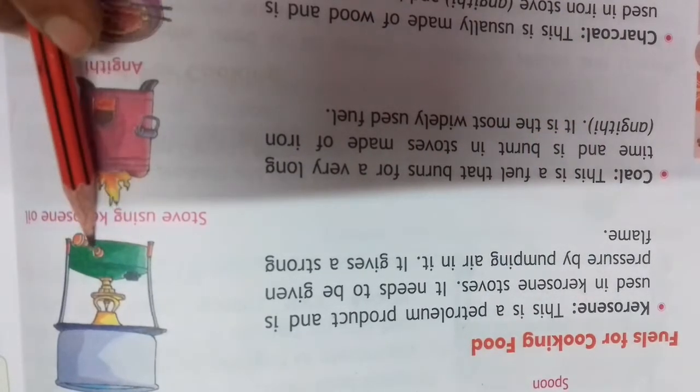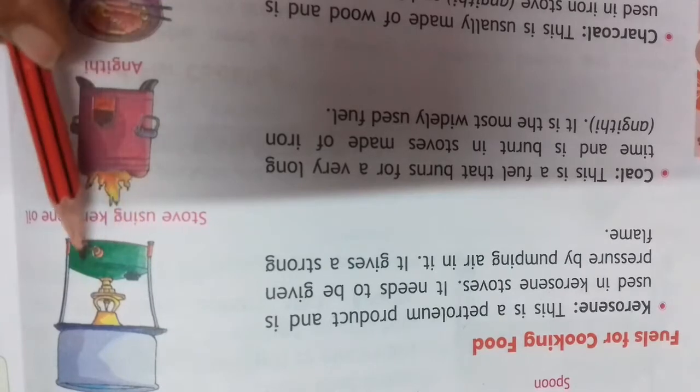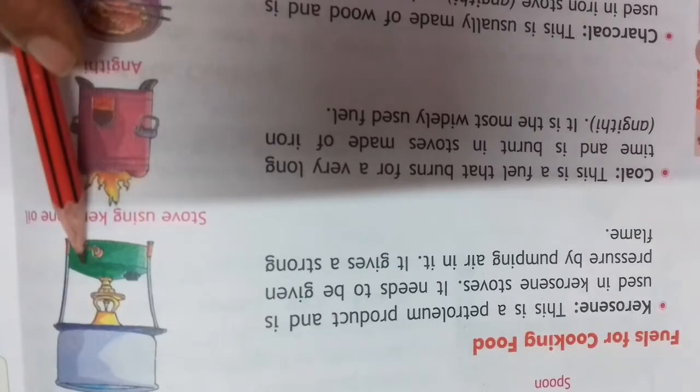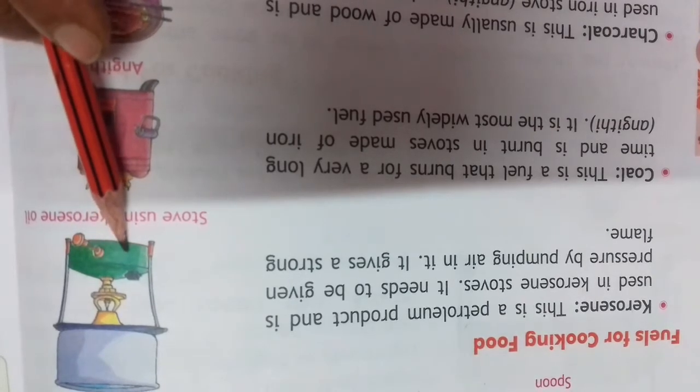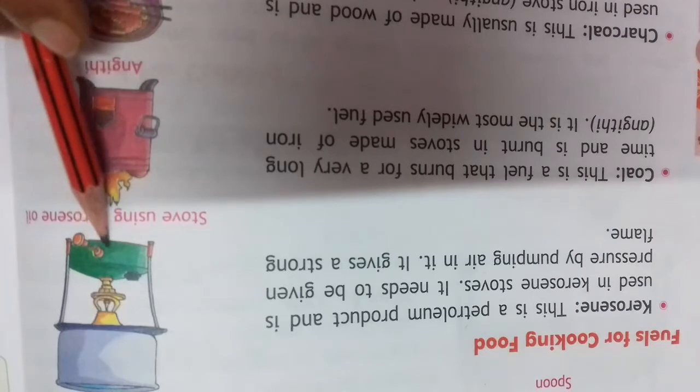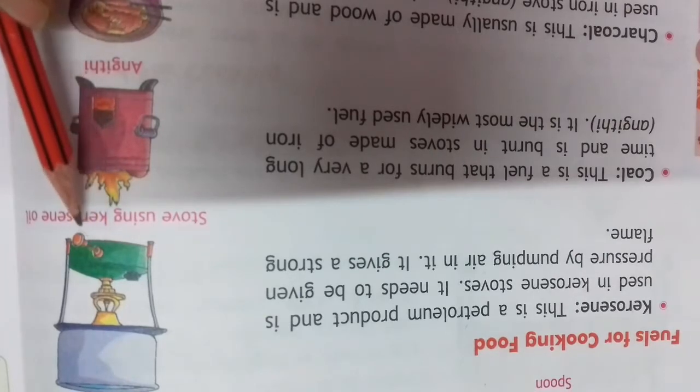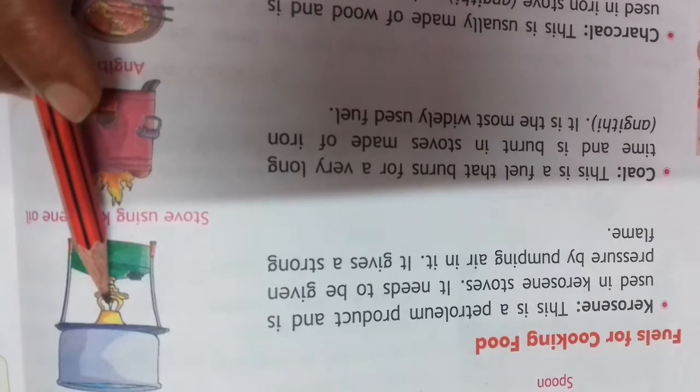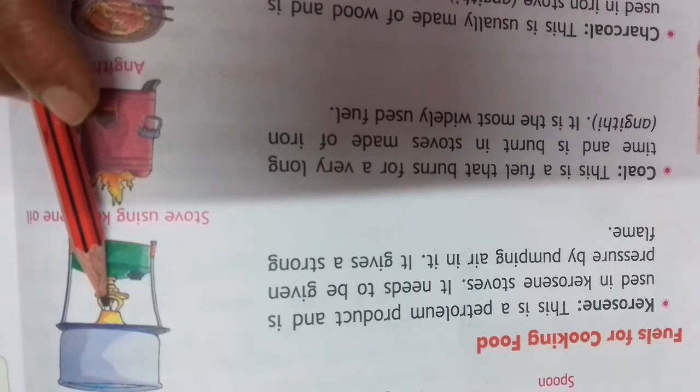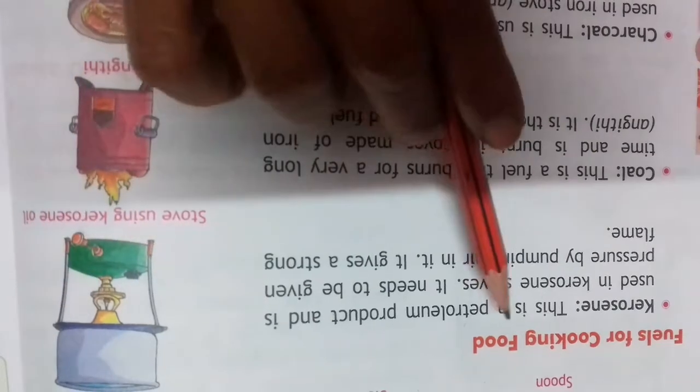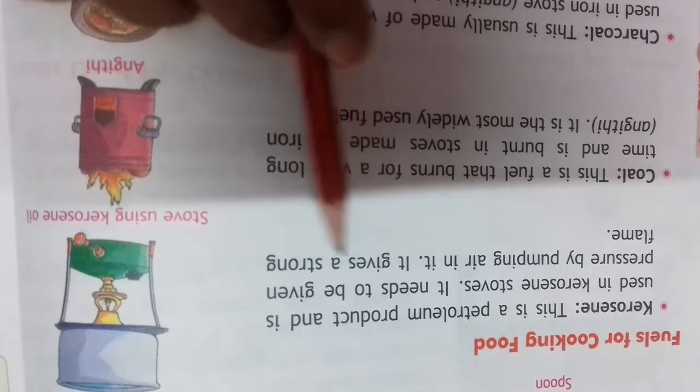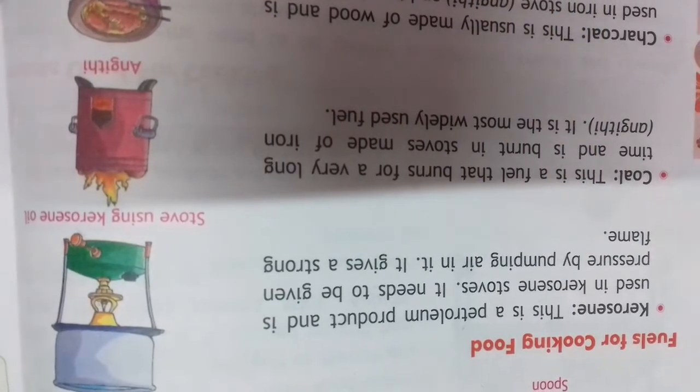You might have seen kerosene stove in old times, if anyone has it at home you can still see it. This is a kerosene stove. It has a tank where kerosene oil is filled and there's a pumping system. We pump air and kerosene comes up. We light a match stick and put it there, it burns and we can cook food on it. It needs to be given pressure by pumping air in it. It gives a strong flame on which we can cook food very well.